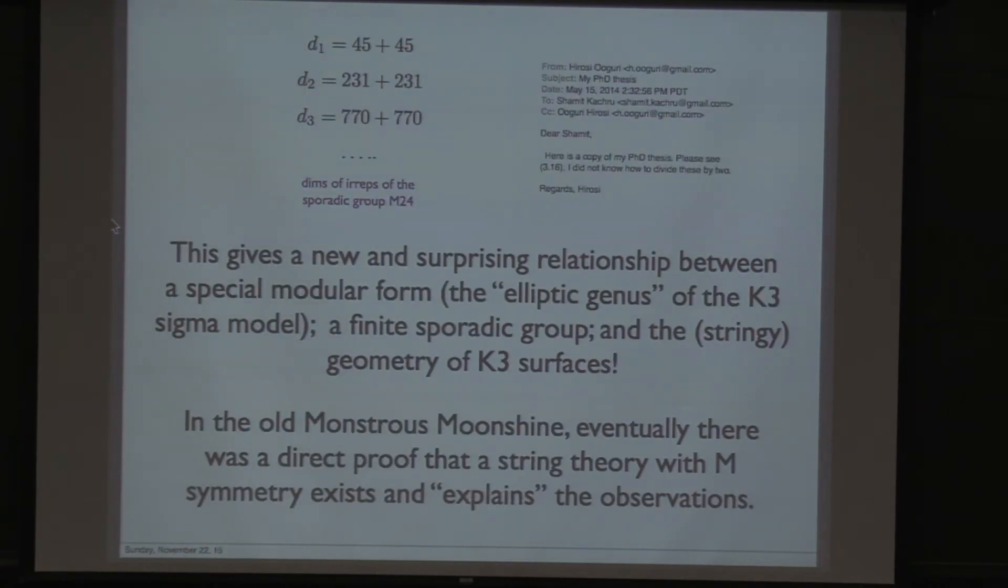Here's the phenomenon. Let's take these D_n's. The first level, we get 90. The second level, 462. The third level, 1540. In 2010, people discovered that 90 is 45 plus 45, 462 is 231 plus 231, 1540 is 770 plus 770. And these are dimensions of representations of this huge sporadic group M24. This gives a new and surprising relationship between a special modular form, the elliptic genus of K3, a finite sporadic group M24, and the K3 surface. It is actually known that no K3 single model has M24 symmetry. It's also known that the full symmetries don't even lie in M24. And this setting is not the most general setting where the phenomenon arises.